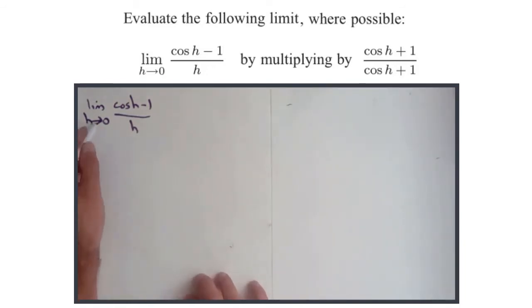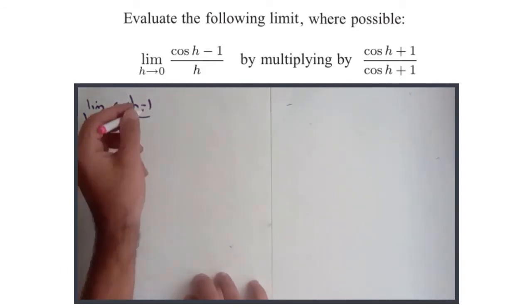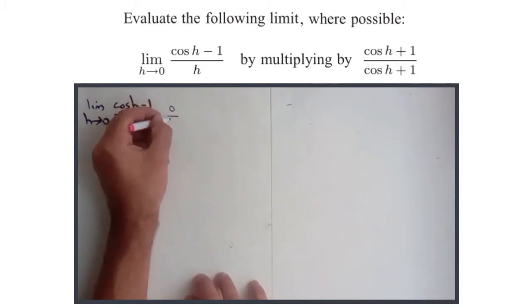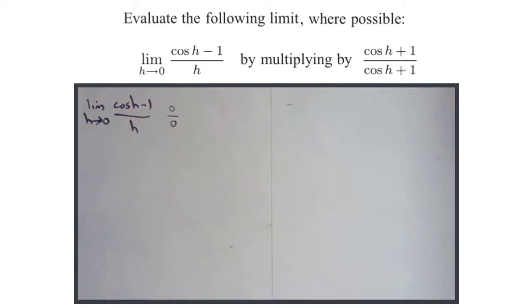Well, if you think about this, as h approaches 0, cos h is going to approach 1. So you know that cos 0 is 1. So cos h minus 1 is going to be very close to 0. 1 minus 1 is 0. And then you've got an h on the bottom when h is approaching 0. So this is going to be of the form 0 over 0, which is classed as an indeterminate limit, which means you need to find another strategy to evaluate it.